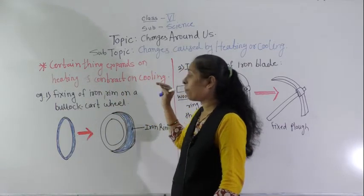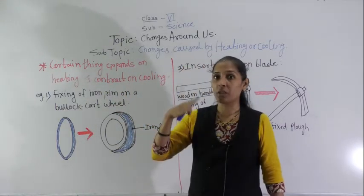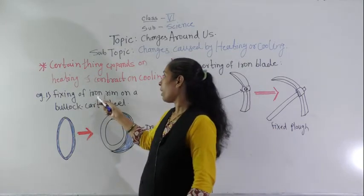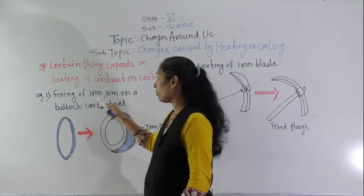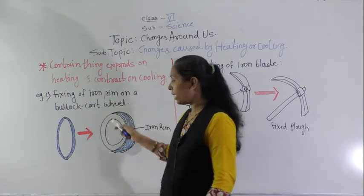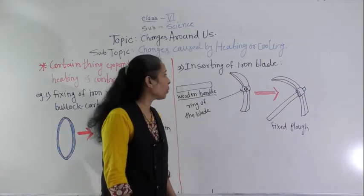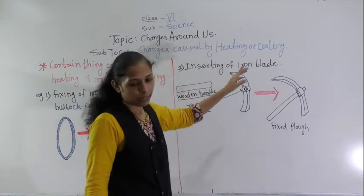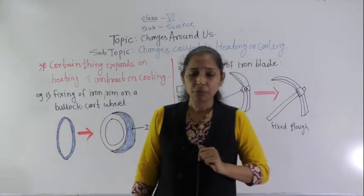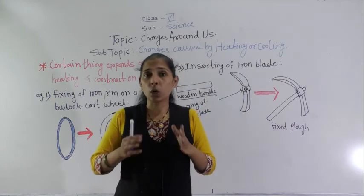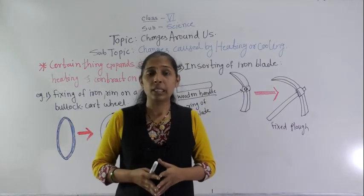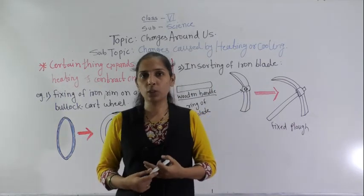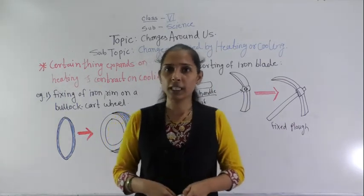Today we discussed certain things that expand on heating and contract on cooling, with two examples: fixing of an iron rim on a bullock cart wheel, and inserting of an iron blade. We will meet in the next video. Thank you.